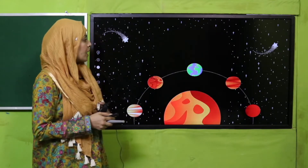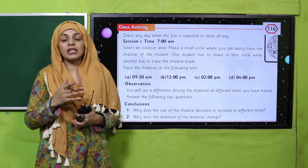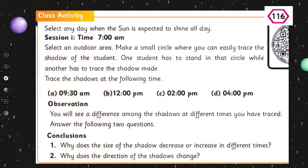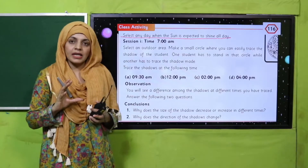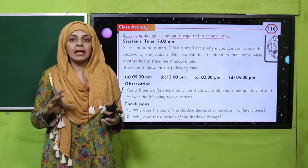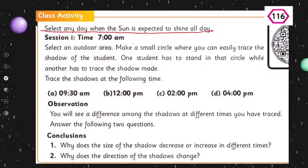Now it is time for the class activity given on page number 106. Quickly open it in your science books. The instructions say: select any day when the sun is expected to shine all day. Do not select a cloudy day because then you won't be able to perform the activity properly - you need a full sunny day.